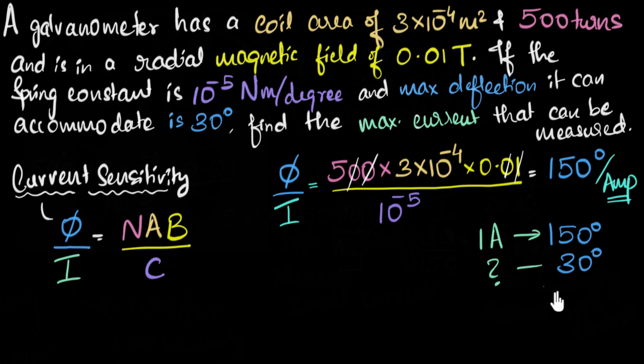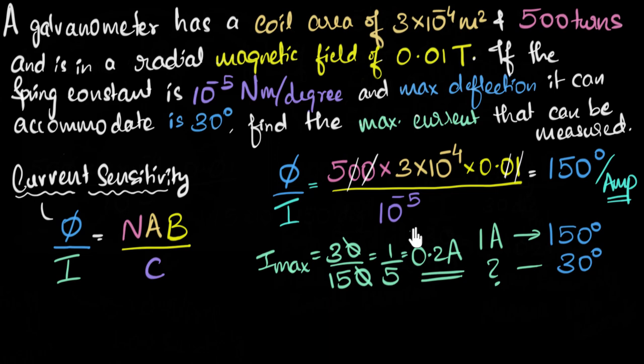And so if I do that, I get, what do I get? I get the maximum current to be 30 divided by 150. And that's one over five, and that's 0.2 amperes. So our galvanometer can only handle a max of 0.2 amperes of current. So we can say that the range of our galvanometer is from zero to 0.2 amperes. So I can change my sticker now and put amperes, and then this becomes an ammeter, which can measure between zero to 0.2 amperes.